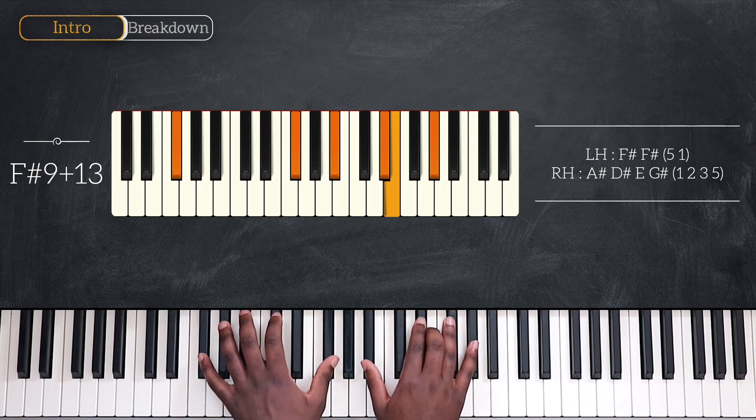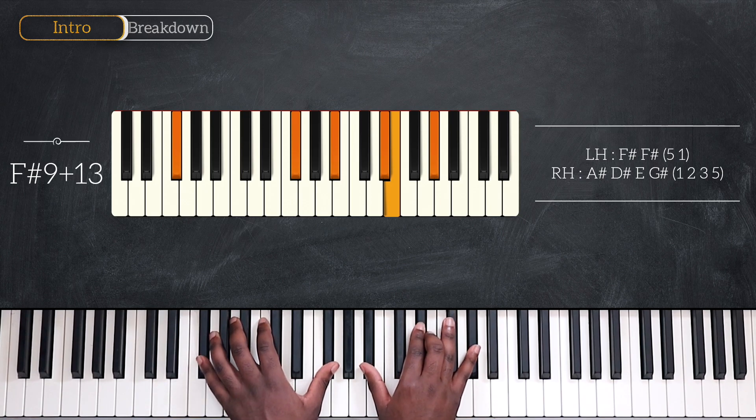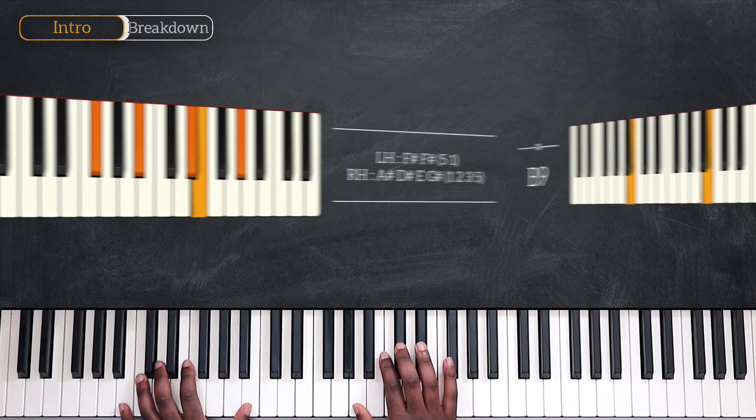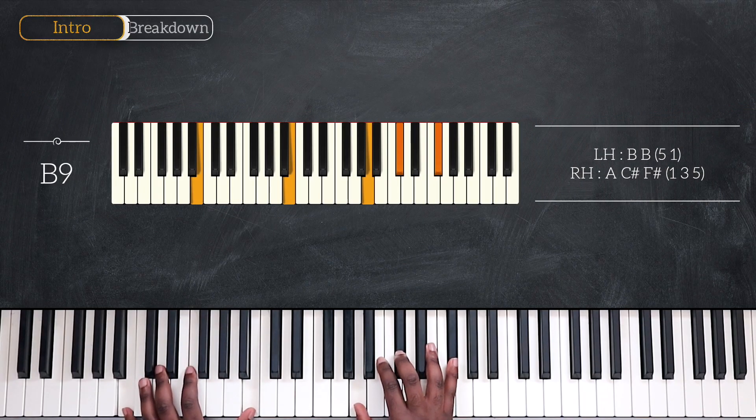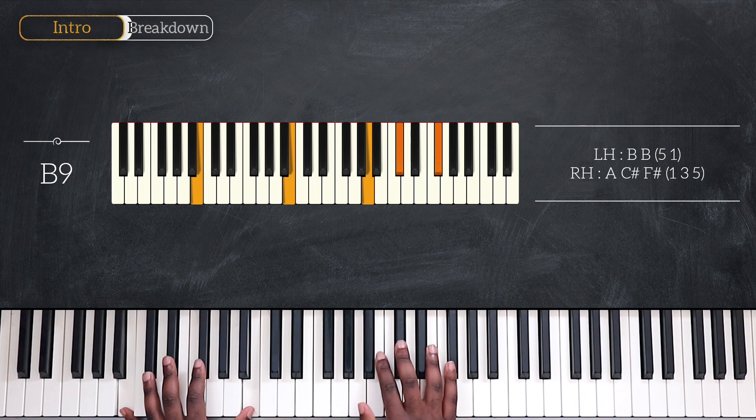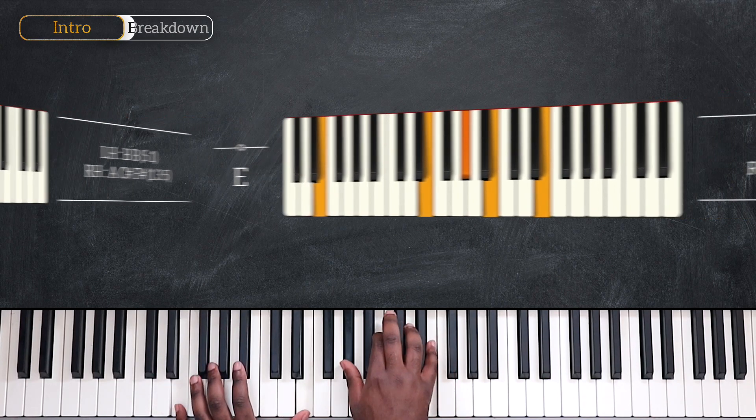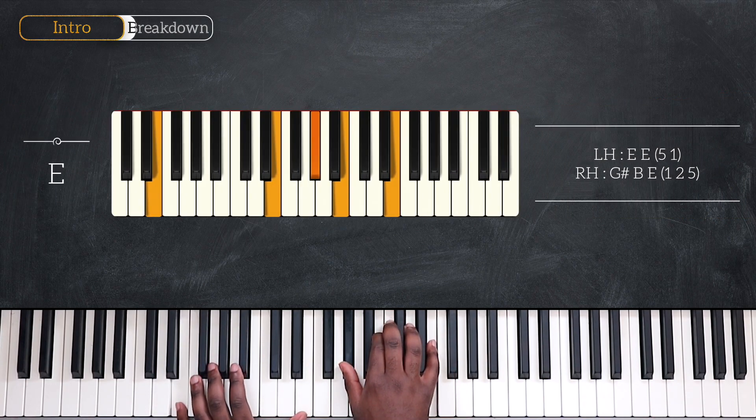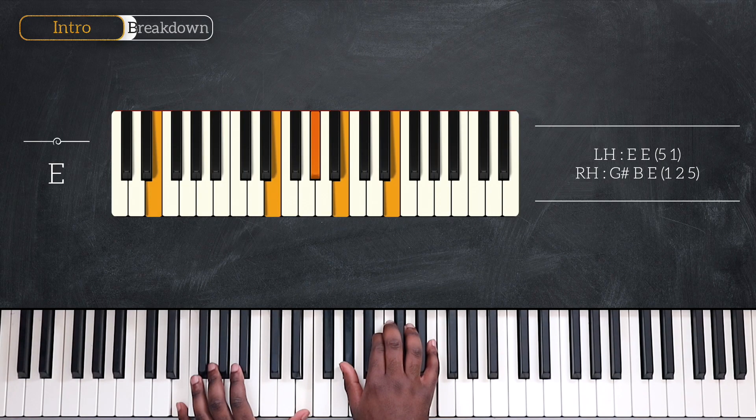Then going up a fourth on B, with B-nine, octave B, A, C-sharp, and F-sharp, resolving to the one chord, E major, octave E, G-sharp, B, and E.